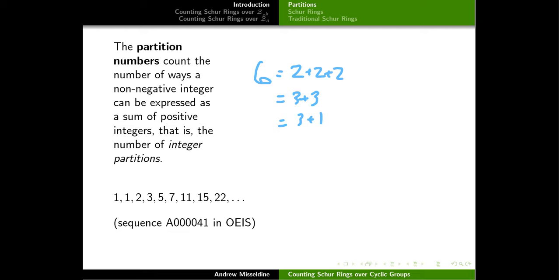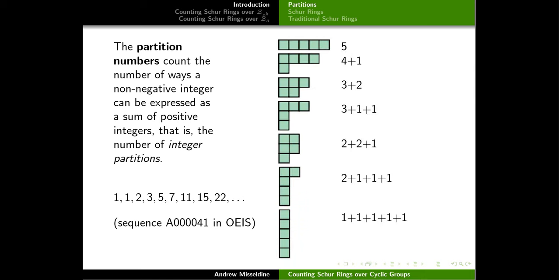There are going to be a lot fewer integer partitions than set partitions for the same size, but the two things are related. When you look at the integer partitions of five, there are seven possibilities: just the number five itself, four plus one, three plus two, three plus one plus one, and so on. These can be illustrated as Young diagrams where the first row corresponds to the first number, the second row to the second number, and these are always written in descending order.